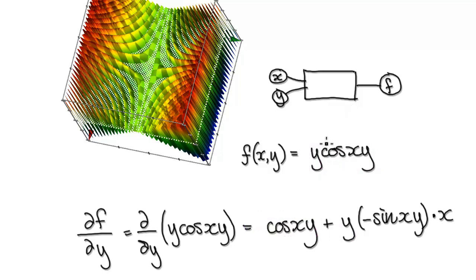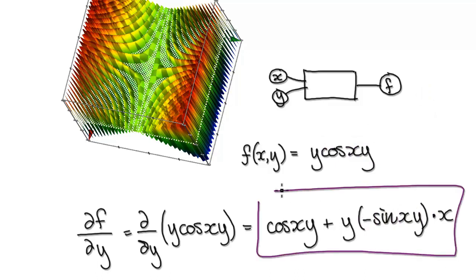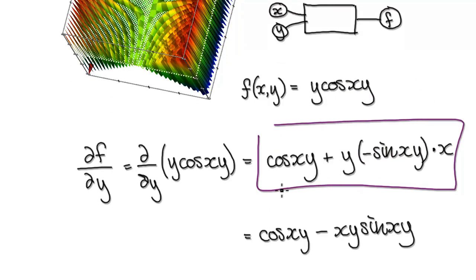Differentiating the second — imagine it as a bubble. Differentiating the second would be minus sine of the bubble, and then times the derivative of the bubble itself. Remember y is the variable and x is a constant, so when you differentiate this it would just be x.